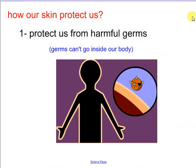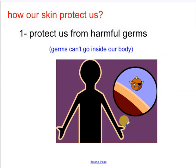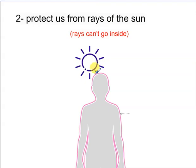How does our skin protect us? Number one: skin protects us from harmful germs or harmful bacteria and viruses. The skin surrounds my body and germs cannot go inside. Number two: skin protects us from rays of the sun. Rays cannot go inside my body and cannot burn our organs.